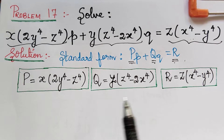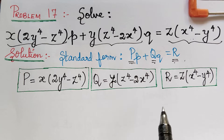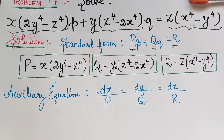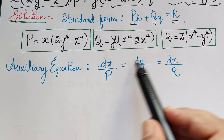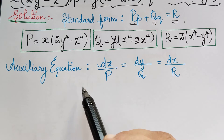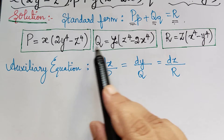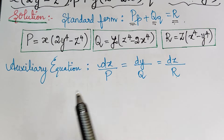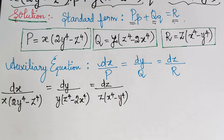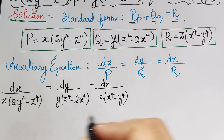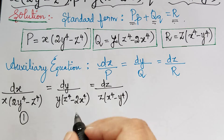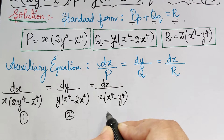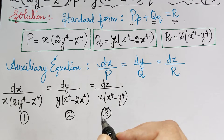The next step is we have to write the auxiliary equation. The auxiliary equation is given by this. Now in this auxiliary equation we have to substitute the value of P, Q, and R, and what we obtain are these ratios — this can be marked as the first ratio, this as the second, and this as the third ratio.